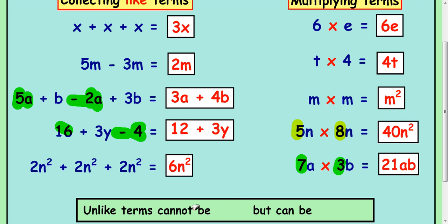So unlike terms, terms that are not the same cannot be added. You can't add them together. You just sit them next to each other, like this example here. Collect up your a's and collect up your b's.